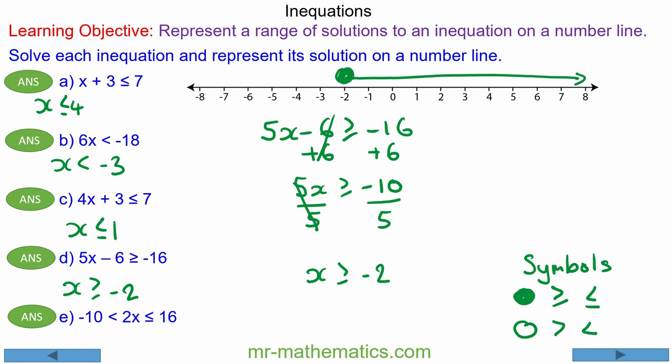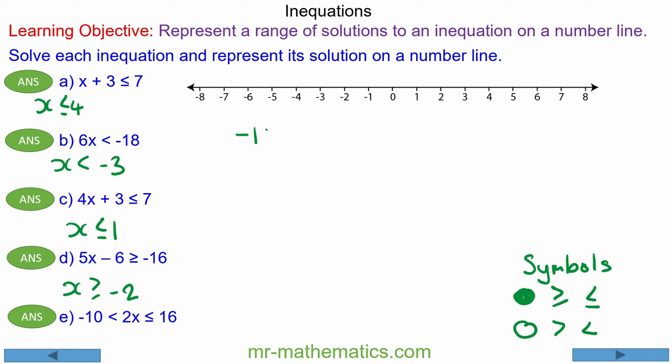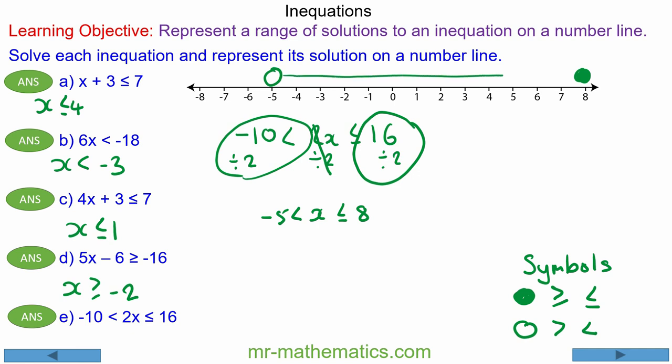For question E we have 2x must be greater than -10 and 2x must be less than or equal to 16. So we don't want 2x we just want 1x. So we'll divide it all by 2 because 2 divided by 2 will make 1. So x must be less than or equal to 16 divided by 2 which is 8 and -10 divided by 2 which is -5. So this time values of x or the range of x is between -5 which it cannot be equal to and positive 8 which it can be equal to.